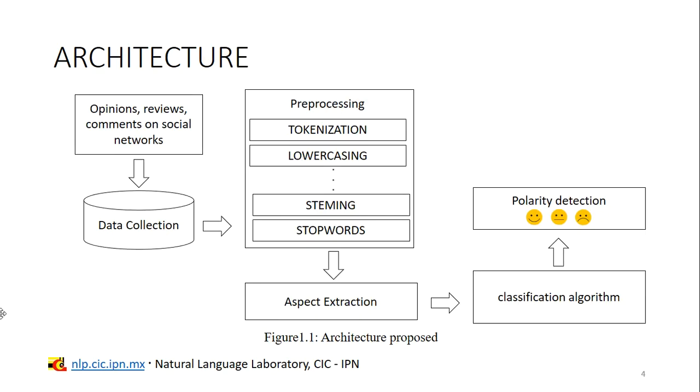The architecture proposed consists of four main modules, which are the following. Data collection, where a specific set of opinions and reviews for social media will reside. Preprocessing, in which we are able to use several techniques to treat the data, like tokenization, lower casing or stemming. Aspect extraction, where we will extract the most important aspects, attributes or components of a review. And classification, where we will use a supervised or unsupervised machine learning algorithm to fit a model with the objective of classifying the entities of a review into a positive, neutral or negative sentiment. I will explain each of these modules with more detail on the next slides.